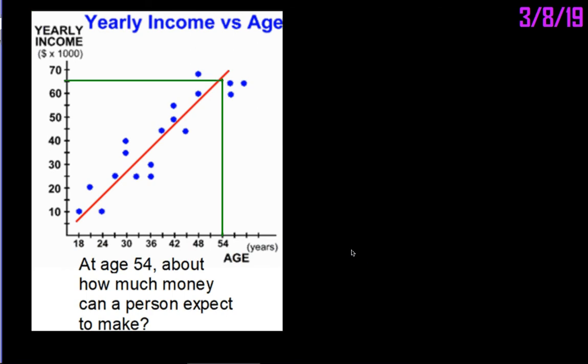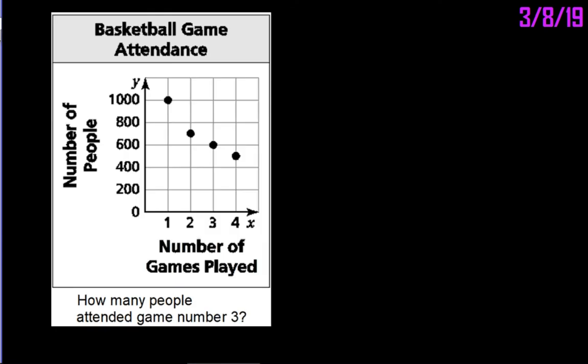It will sound like this: We can expect a person to make $65,000 at age 54.